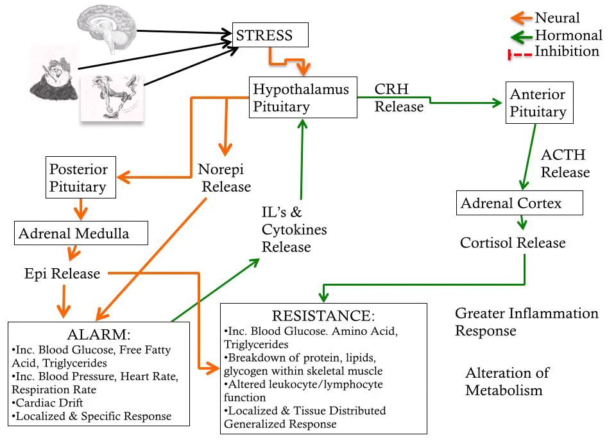To access amino acids and triglycerides, we break down protein and lipids from skeletal muscle and adipocytes. The changes in cortisol and epinephrine signaling, along with changes in interleukin and cytokine releases, alter leukocyte and lymphocyte functioning, leading from a localized tissue disturbance to a generalized one. We get a greater inflammatory response and an overall alteration of metabolism. We might feel something is off — an aching muscle or joint, or a sense of coming down with something. Hopefully, we've eliminated enough stress to nullify it and return to normal function.